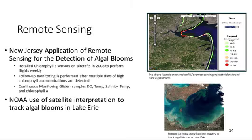Remote sensing is a growing tool for water quality management. It brings together interpretation of photo images from satellites and aerial photos with on-the-ground sampling to develop predictive tools for issues like algal blooms. One of the limitations of using remote sensing, particularly satellite imagery and aerial photographs, is the limitation on the scale of the images where you're typically not able to see smaller water bodies or water bodies that are obstructed from view by tree cover. However, they are a growing tool and very useful for large water bodies like coastal areas and large lakes.